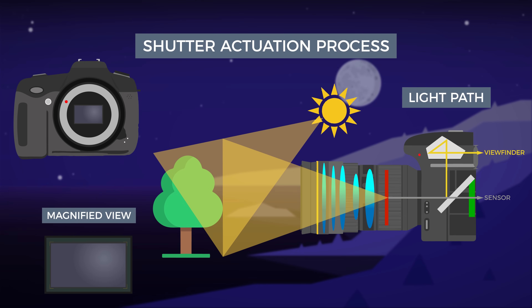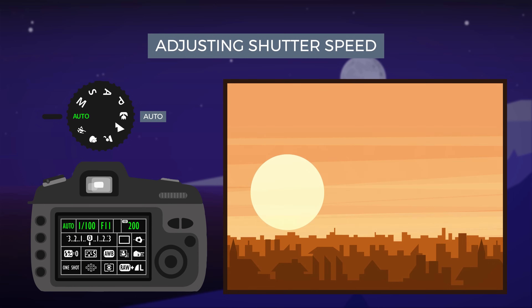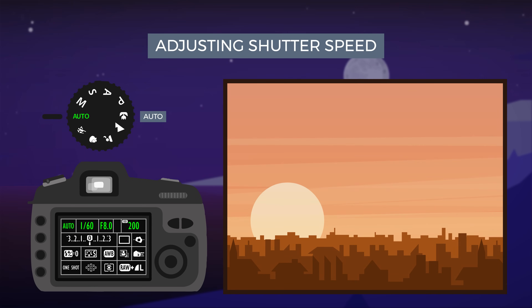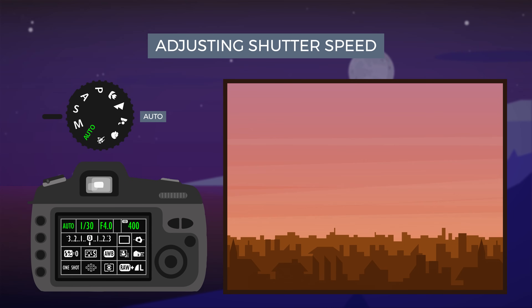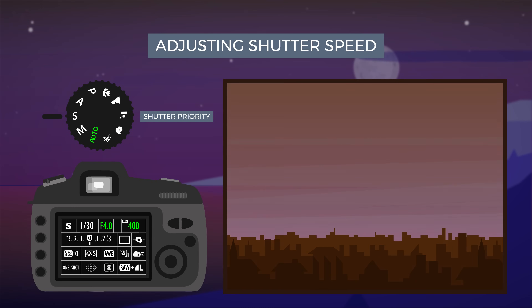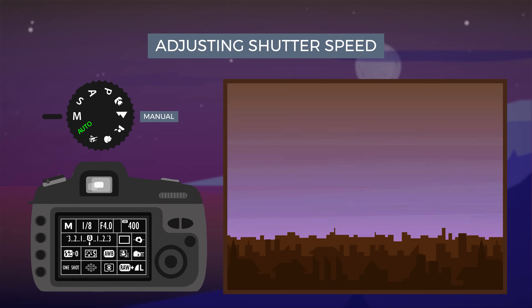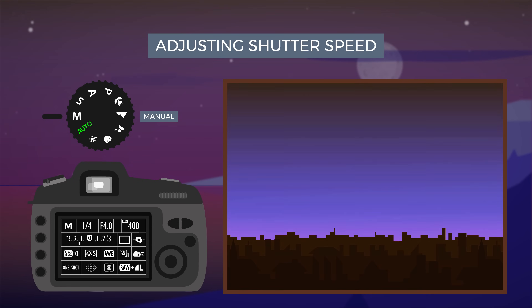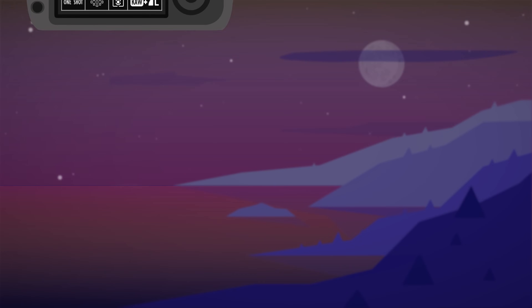The longer the shutter is kept open, the more light will enter the camera. In auto mode, cameras will meter the scene and determine an adequate shutter speed to keep the picture from becoming either over or underexposed. You can manually change the shutter speed by either putting the camera in shutter priority mode, which will let you change shutter speed while letting the camera calculate ISO and aperture, or full manual mode, which gives you full control over all your camera settings.